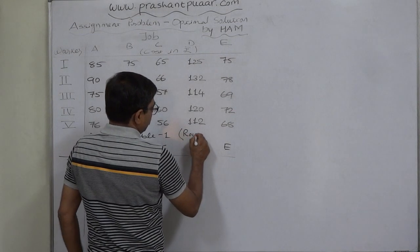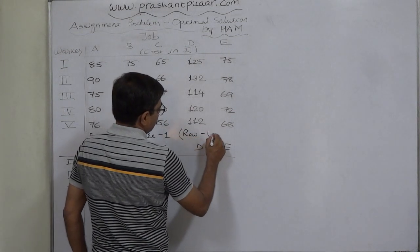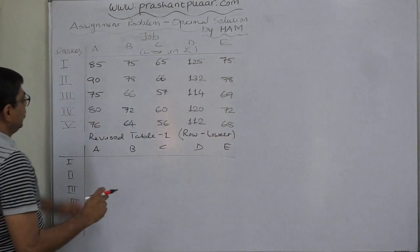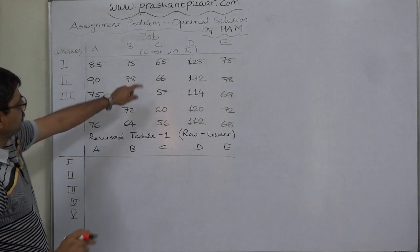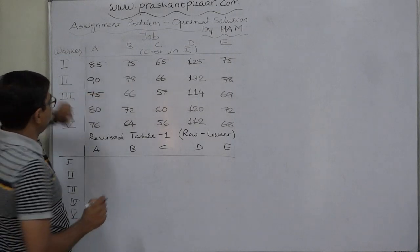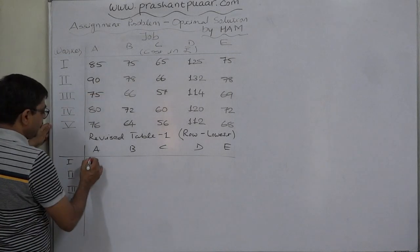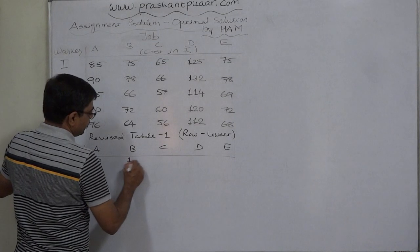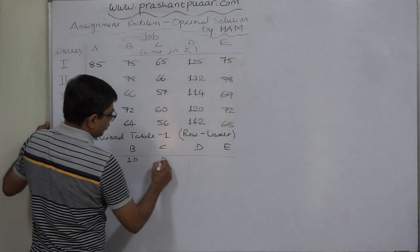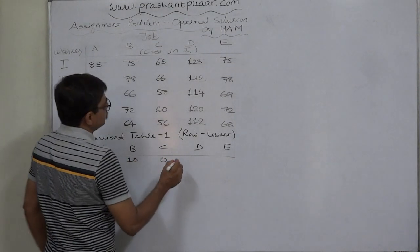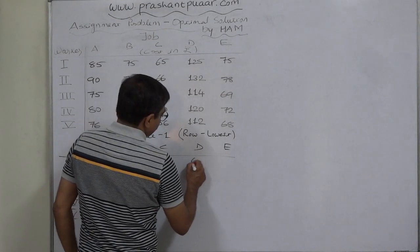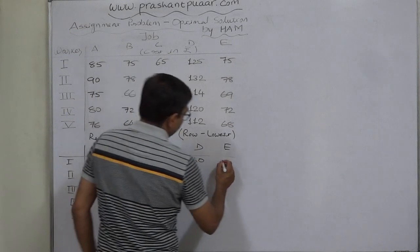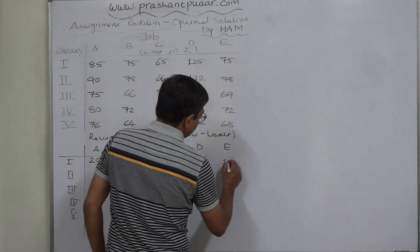The formula to follow is: row minus lowest value. In the first row, the lowest value is 65. So: 85 minus 65 is 20, 75 minus 65 is 10, 65 minus 65 is 0, 125 minus 65 is 60, and 75 minus 65 is 10.